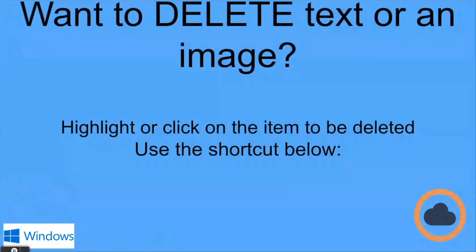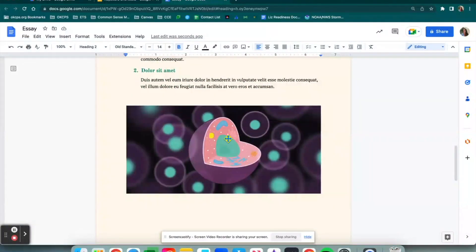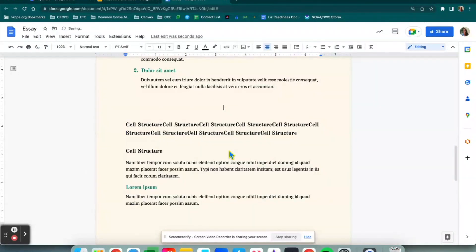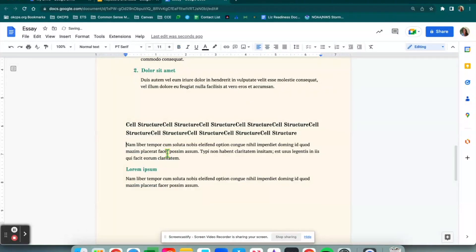The next one we will go over is how to delete text or an image. We're going to highlight or click on the item that you want to be deleted and then use the shortcut Control+X. Let's say I don't want this image here — I'm going to click on it and then Control+X to get rid of it, and now that image is gone. You will do the same thing for text: highlight it, Control+X, and that text is gone.